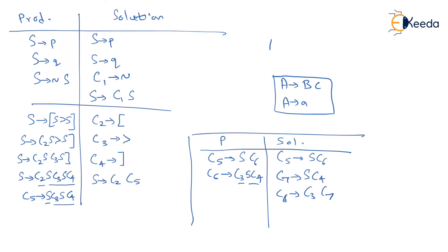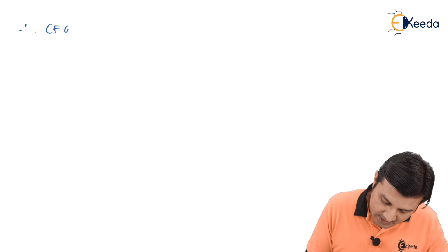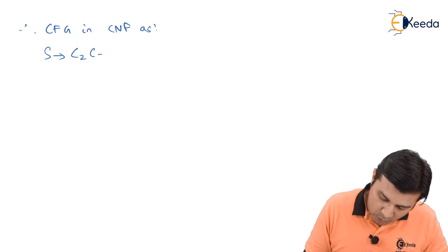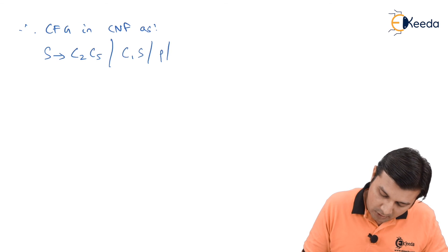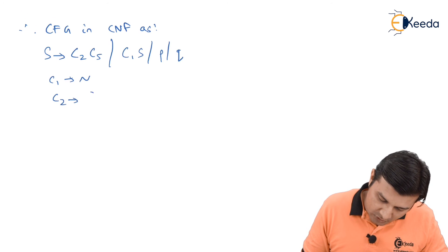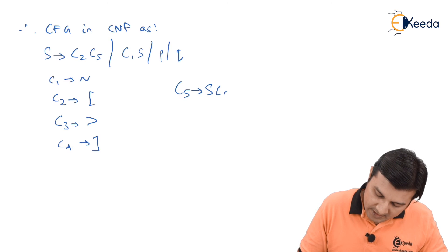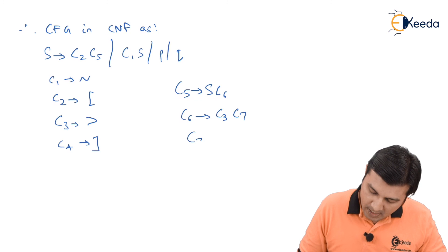So now it is a time to rewrite all the productions under one roof. Let us do that now. Therefore, I have my CFG in CNF as follows. I have S gives C2 C5 or C1 S or P or Q. C1 gives me tilde. My C2 gives me square bracket. My C3 gives me greater than. C5 gives me S C6. C6 gives me C3 C7.